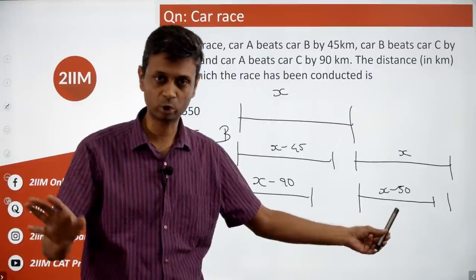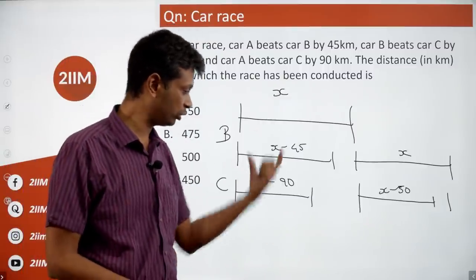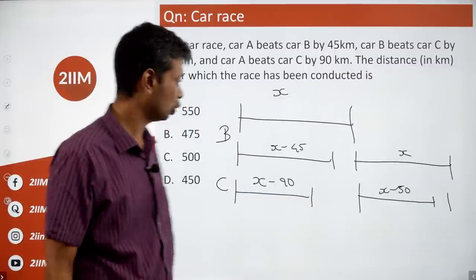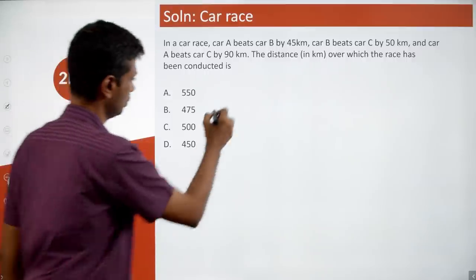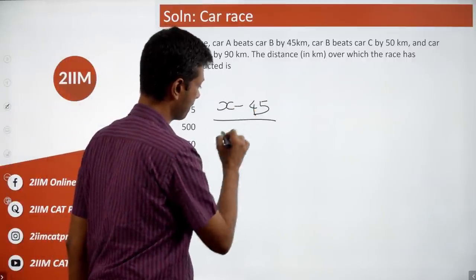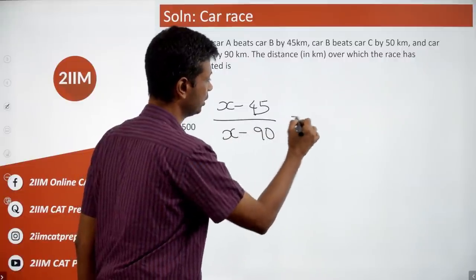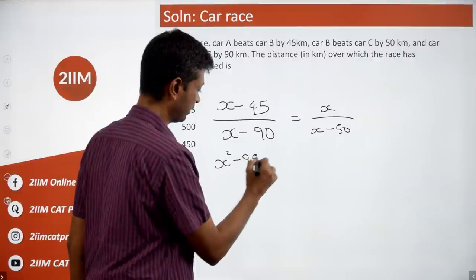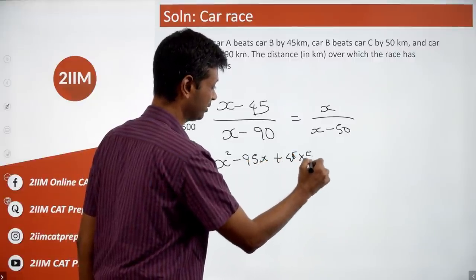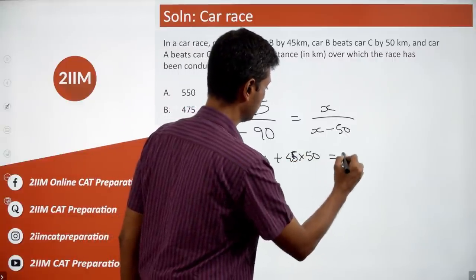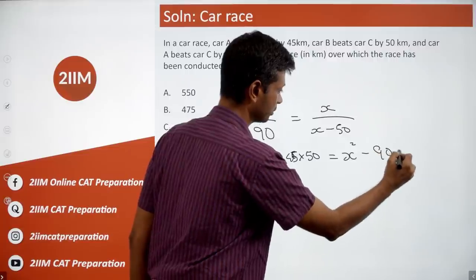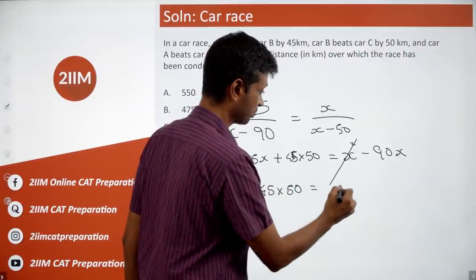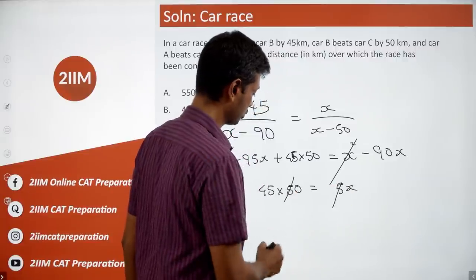The only thing we need to think about is ratios. The ratio of distance covered between B to C is always the same. So (x minus 45)/(x minus 90) = x/(x minus 50). Cross multiply: x² minus 95x plus 45×50 = x² minus 90x. This gives 45×50 = 5x, or x is 450 kilometers.